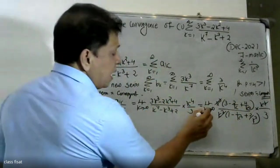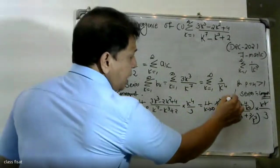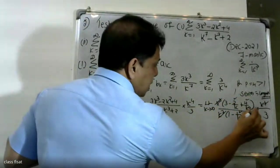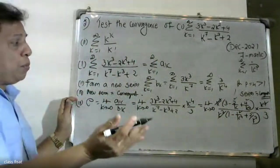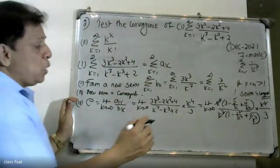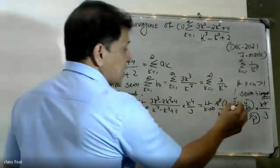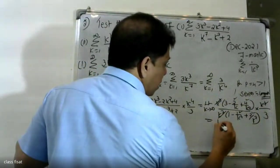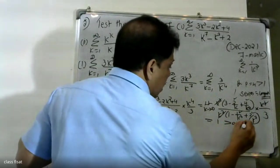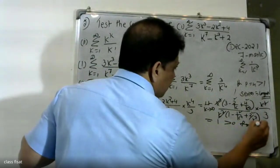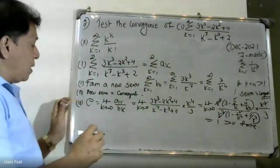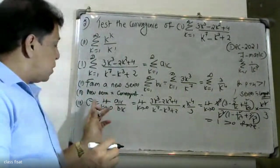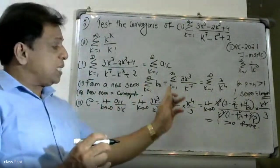Evaluating the limit, as k tends to infinity, the expression tends to a finite value. The 3s cancel, and we find the value of ρ. Since the terms simplify, the numerator gives 3 and denominator gives 1, so ρ equals 1, which is finite and nonzero.